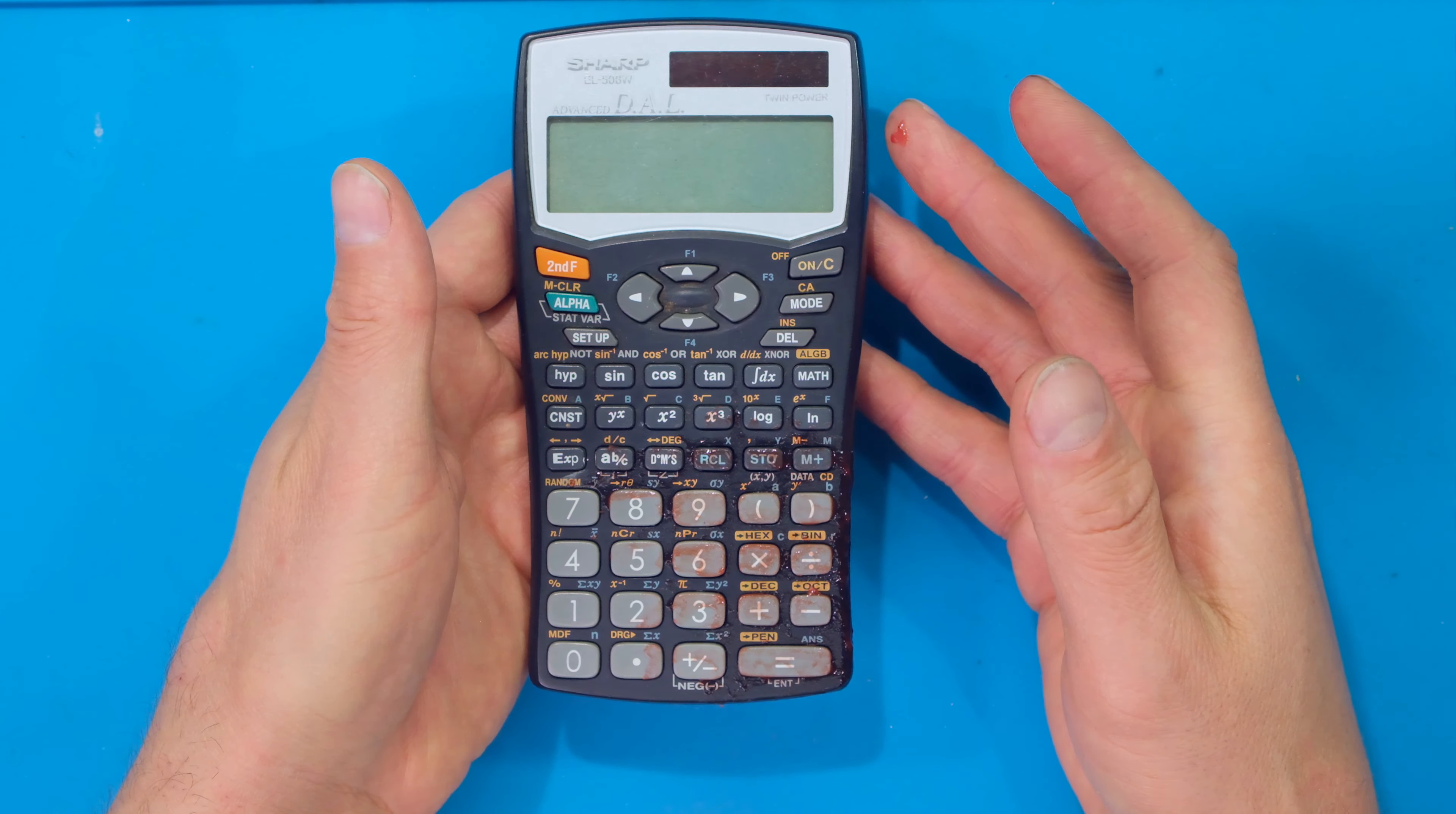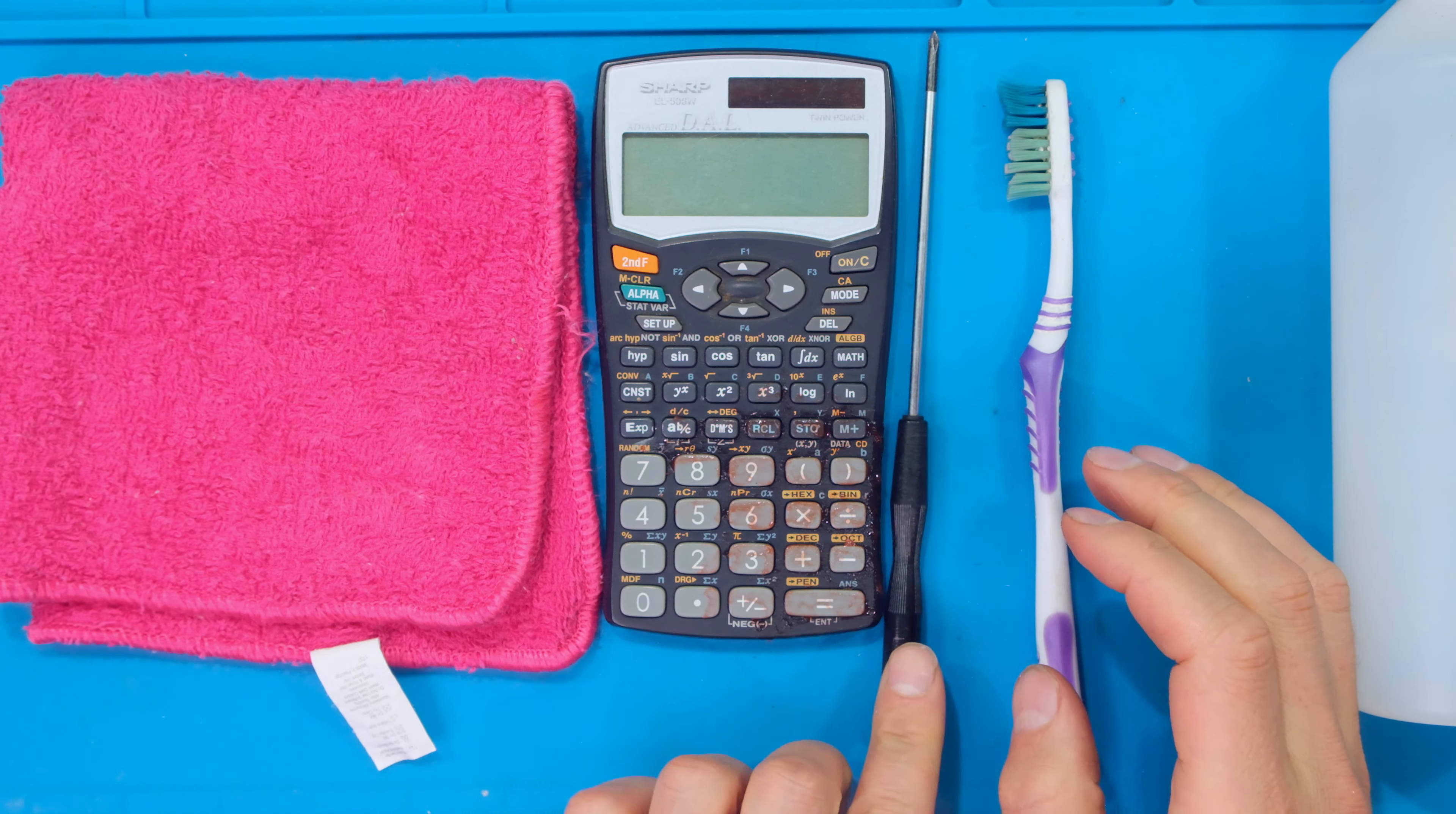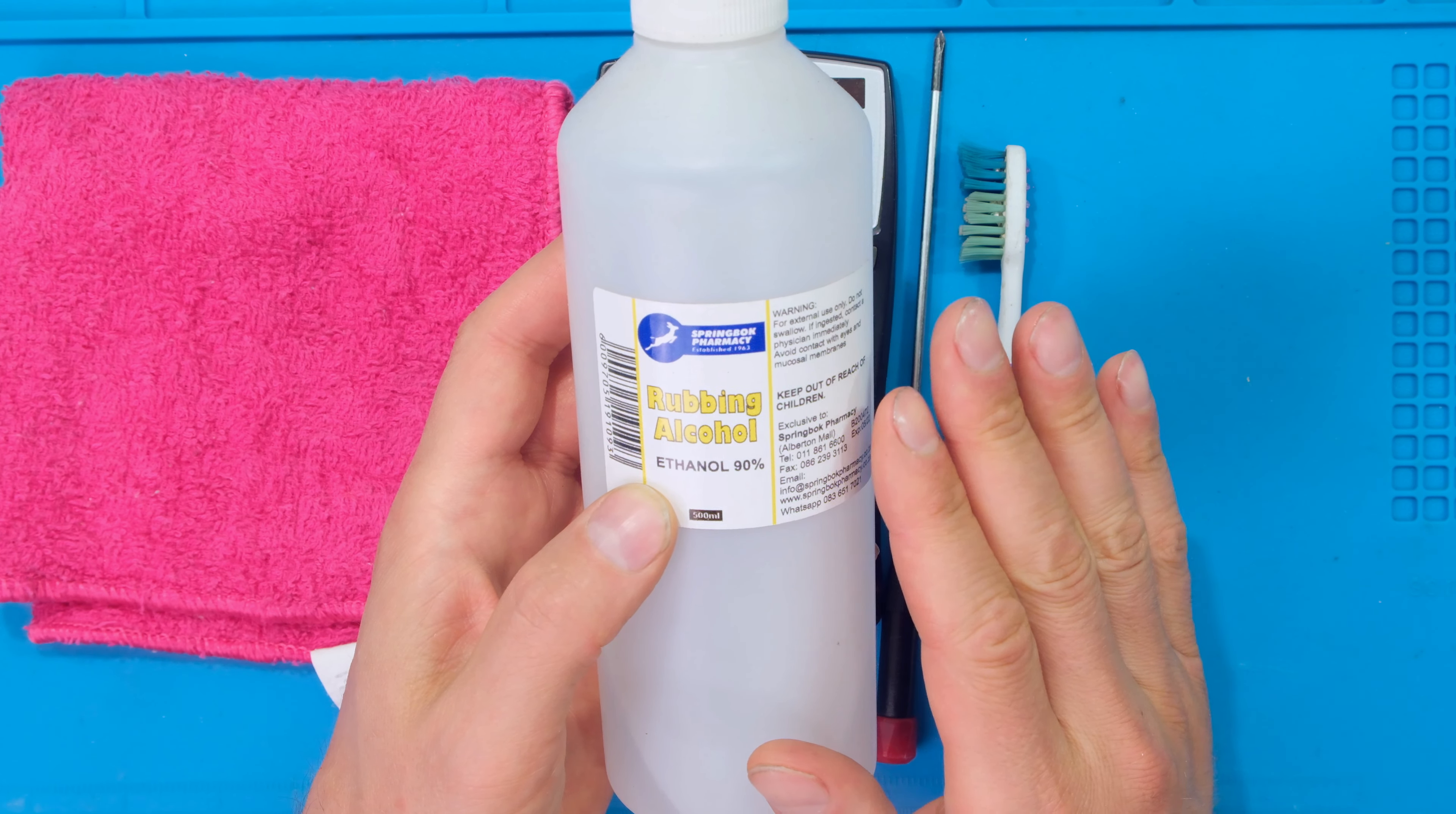In this video I'll demonstrate how to resolve this problem. I'll need a cloth, a screwdriver to open the calculator, a brush, and rubbing alcohol. This is just rubbing alcohol with no additives, no glycol. It removes oil and also leaves the surface completely dry.